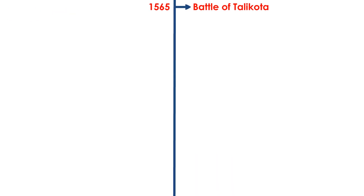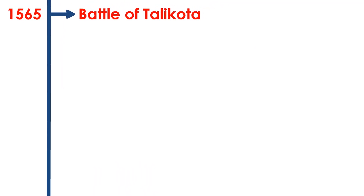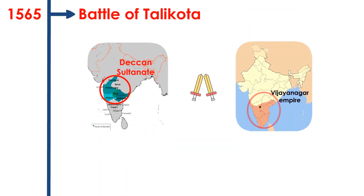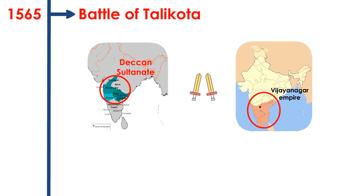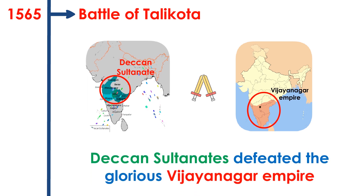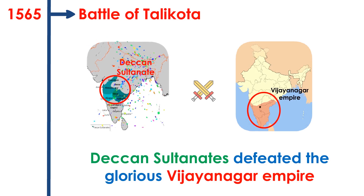Battle of Talikota. The battle was fought between two kingdoms: the Deccan Sultanate and the Vijayanagar Empire. Rama Rai was heading the Vijayanagar Empire. The Deccan Sultanate defeated the glorious Vijayanagar Empire.